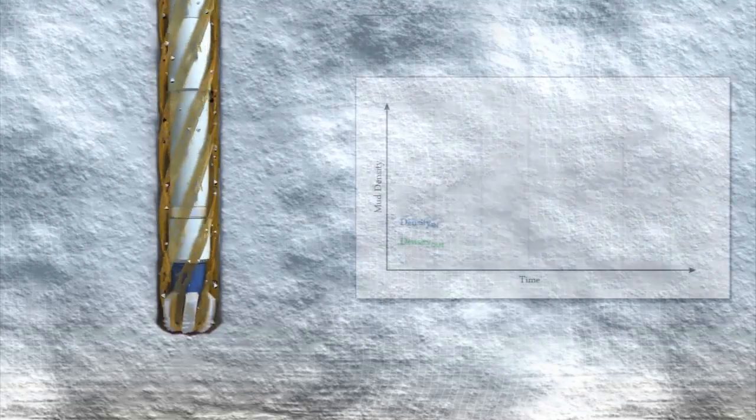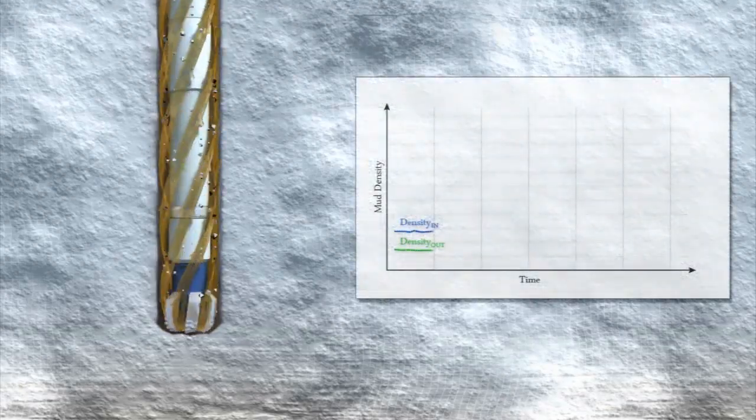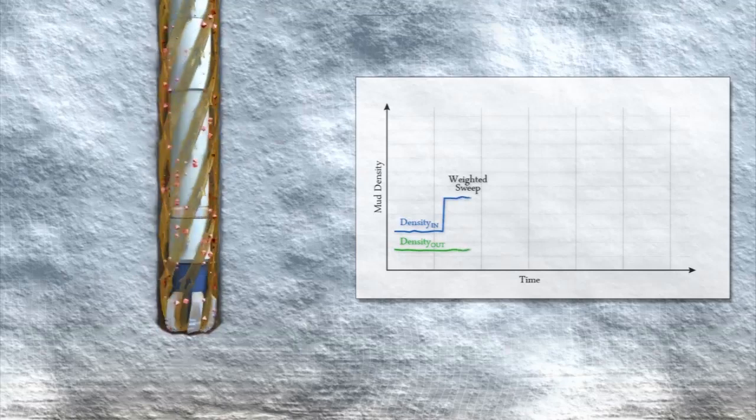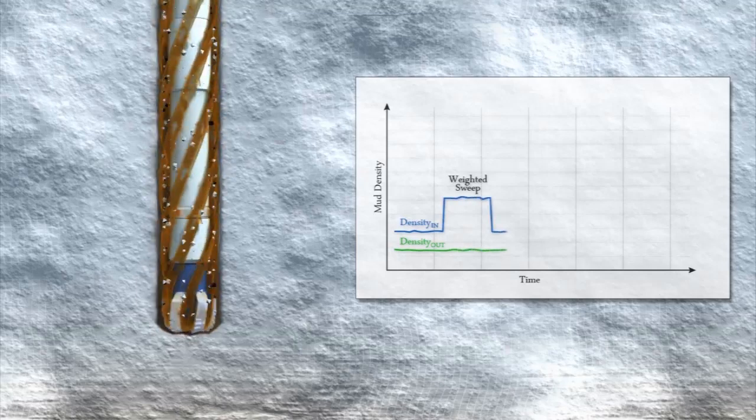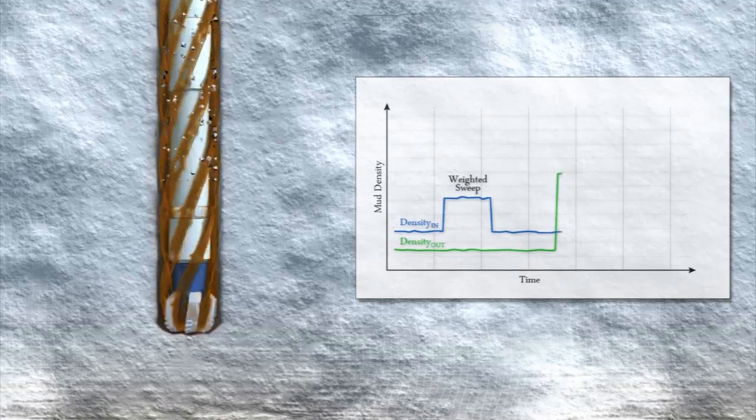Tracking the density in and out helps quantify the effectiveness of a sweep. The density differences of the sweep on the return side would be proportional to the amount of cuttings removed.